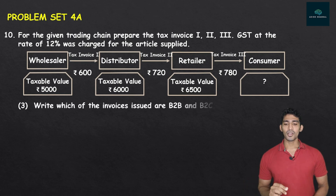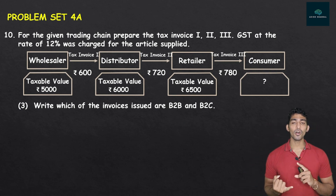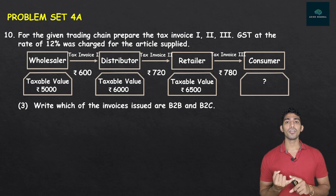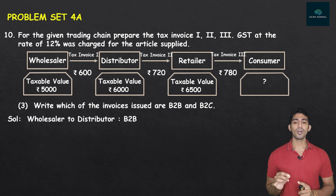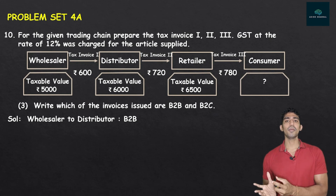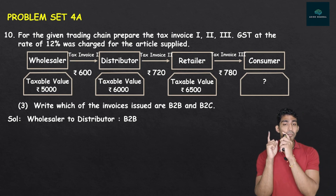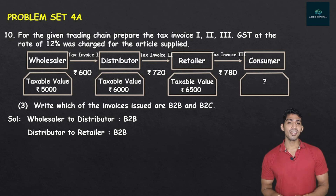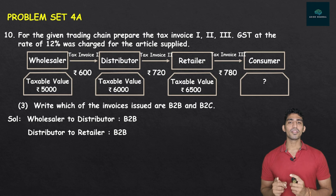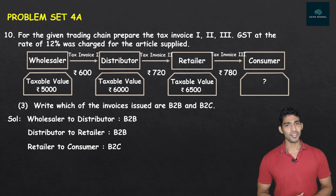The third sub-question: which invoices are B2B and which are B2C? B2B means a transaction between business persons; B2C means from business to consumer. Wholesaler to distributor — both are businessmen — so that is B2B. Distributor to retailer — both businessmen — also B2B. Retailer to consumer — business person to consumer — that is B2C. This completes Question 10 for 4 marks.